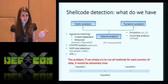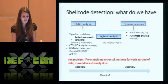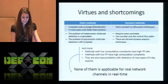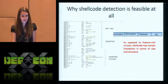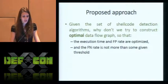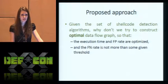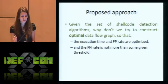If we look at those methods, we can notice that none of them can detect every type of shellcode. So if we want to detect everything, we can simply try to execute one algorithm after another — but it would be extremely slow. Now I'm going to try a little bit of science. That's why shellcode detection is viable at all: in contrast to viruses which are rich with features, shellcodes have certain size limitations and structure limitations. Given the set of shellcode detection algorithms, why don't we try to construct a classifier which is optimal in terms of false positive rate and execution time — while also not forgetting about false negative rate?